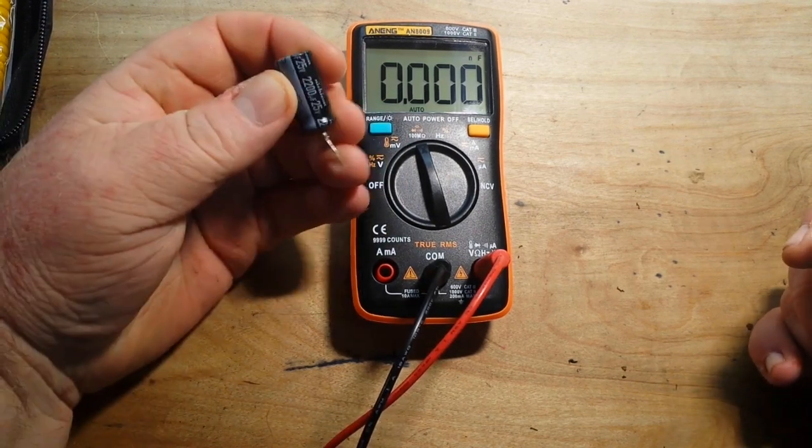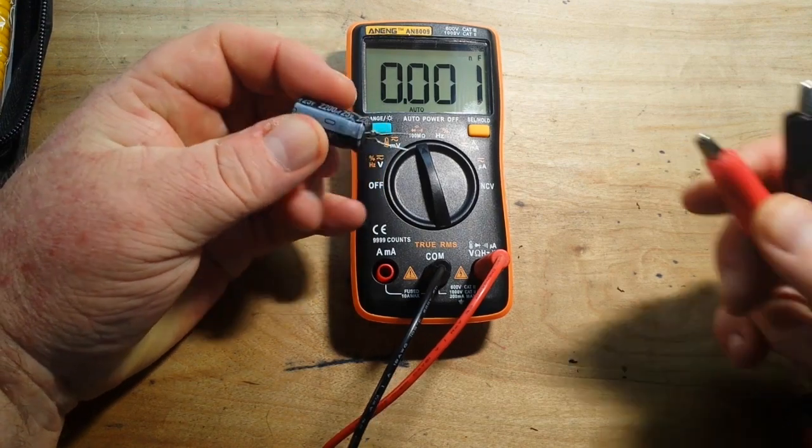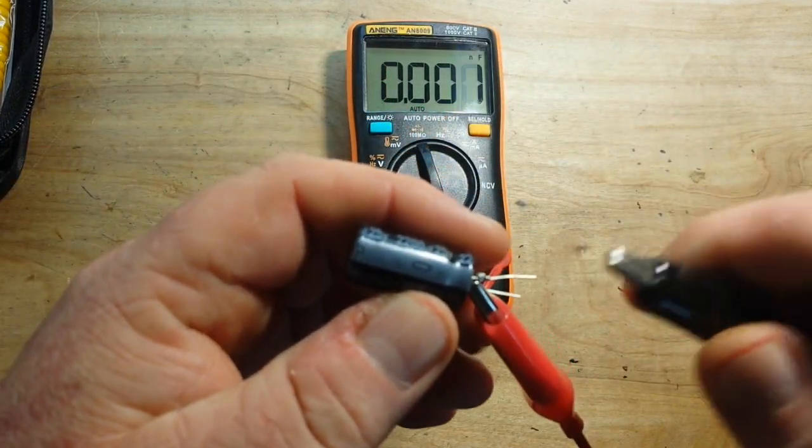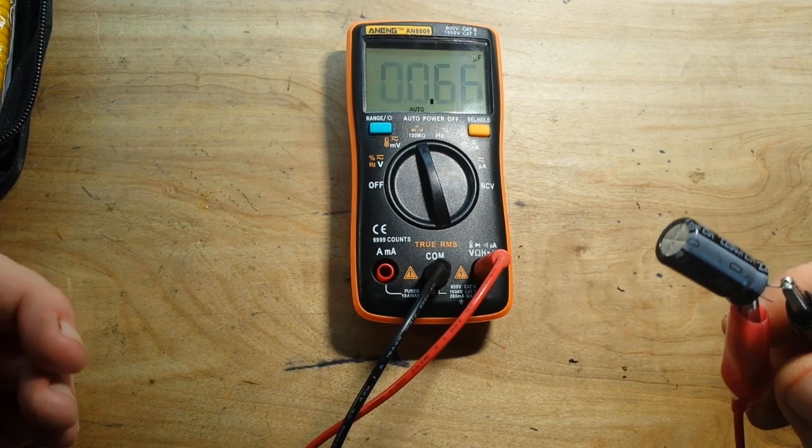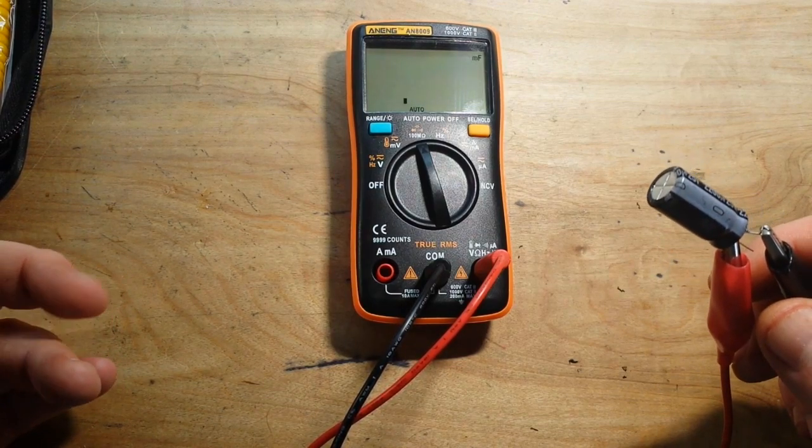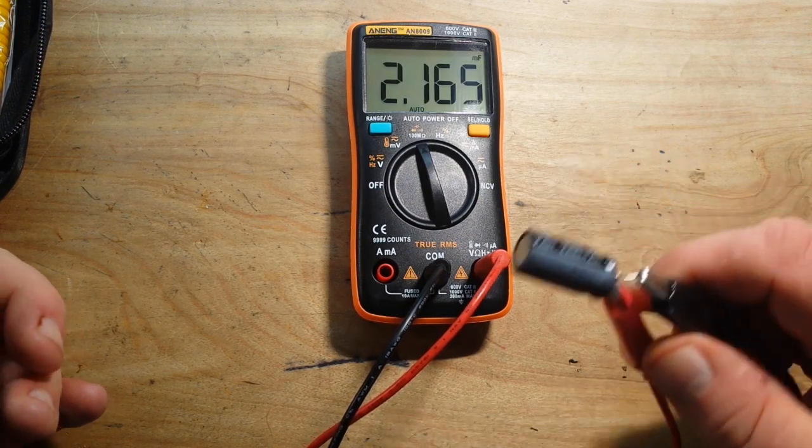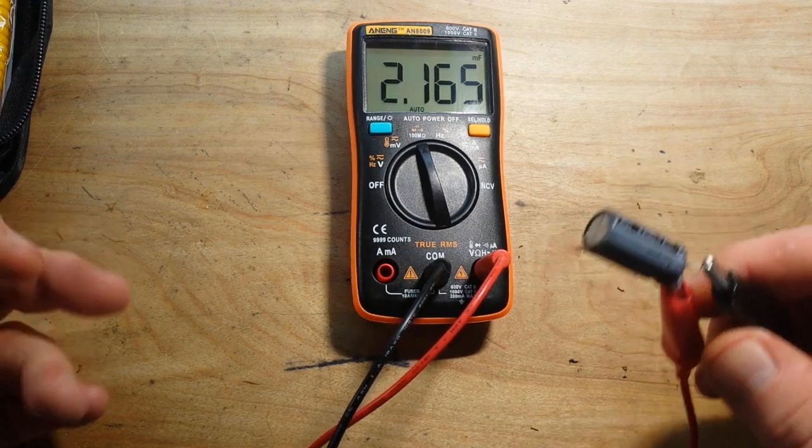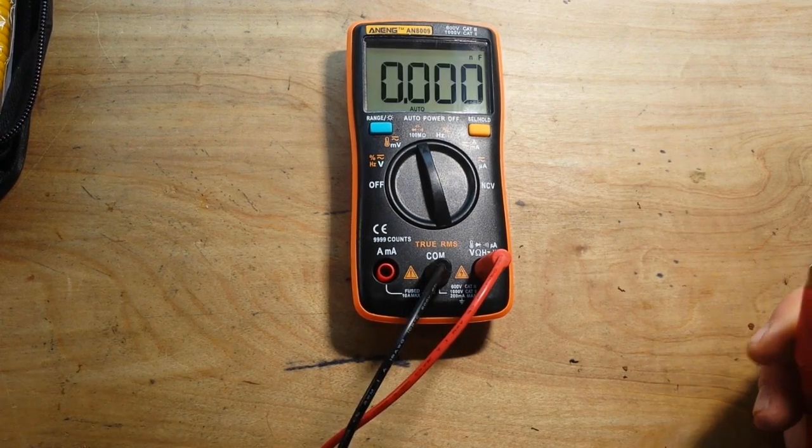And here's a 2200 microfarad electrolytic. Just going to make sure you have your polarities correct when you hook these guys up. What's she read? What's she read? 2.1 millifarad, which would be 2100.5 micro. So good.